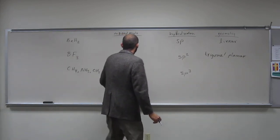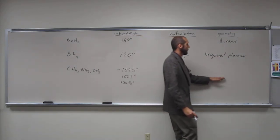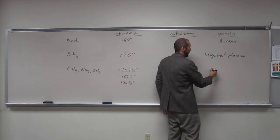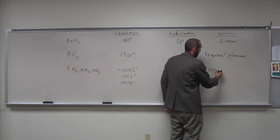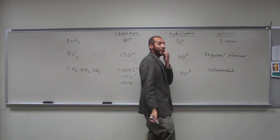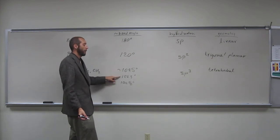And of course, for electronic structure, what would be the electronic structure for all of these? Tetrahedral. Yeah. But then if we went to molecular geometry, right, this one would be tetrahedral, this one would be what?